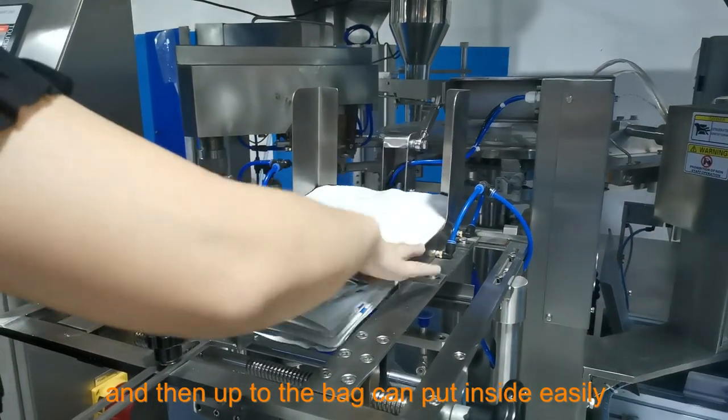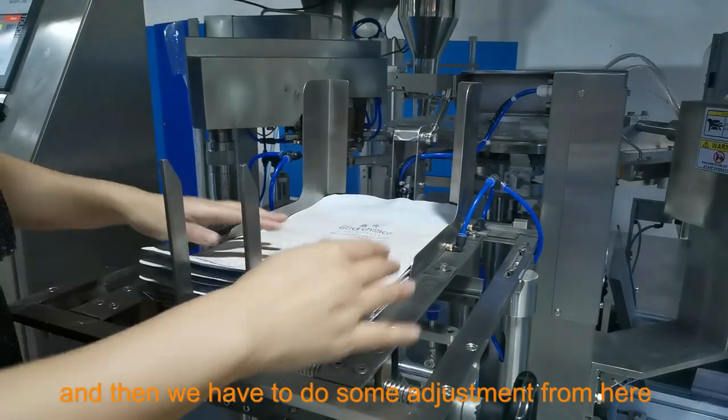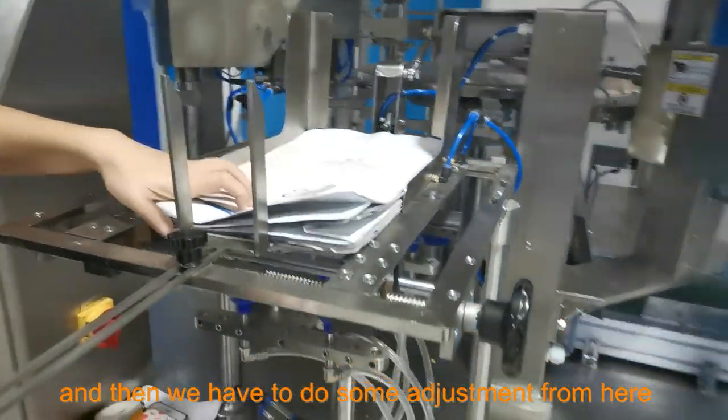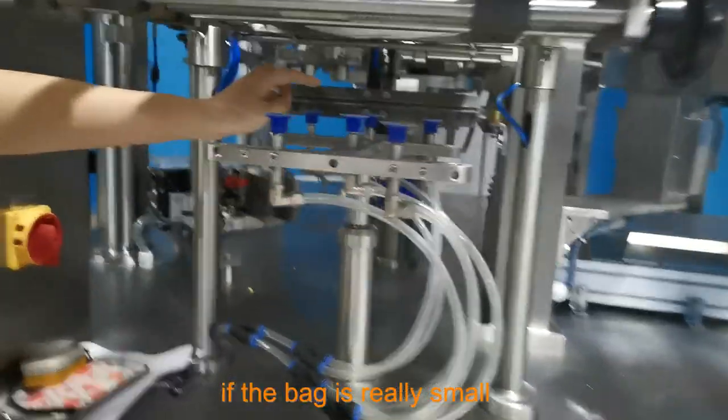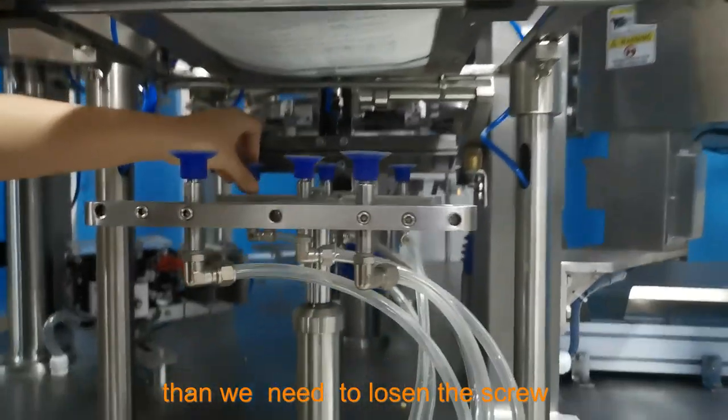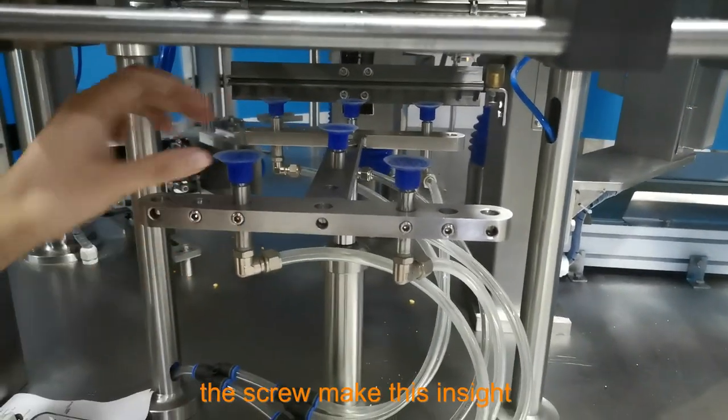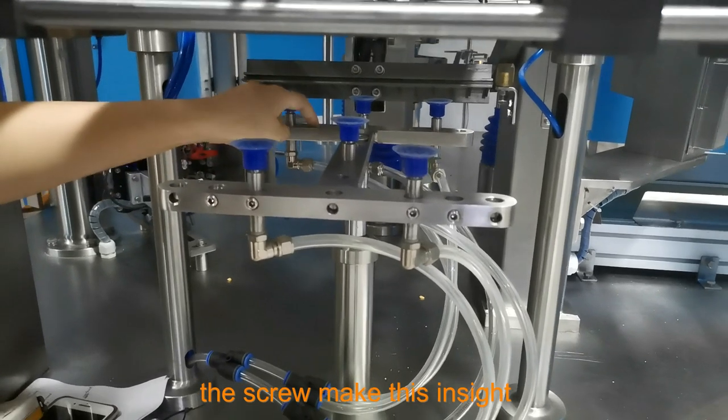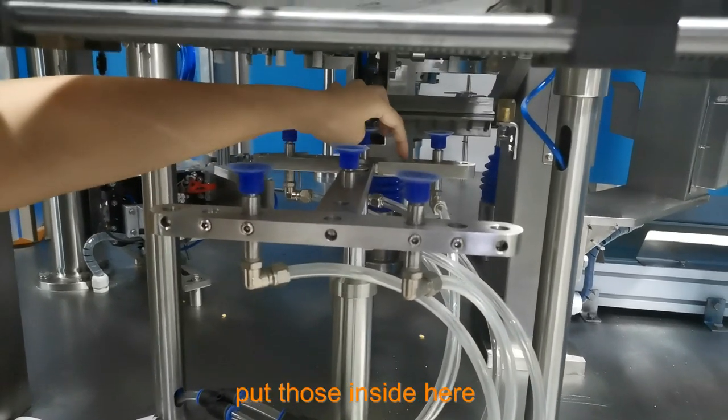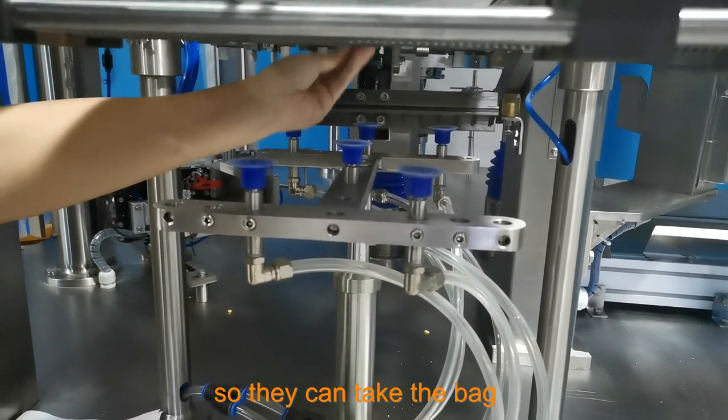And then we have to do some adjustments here. If the bag is very small, then we need to loosen the screw with the screw. Make this inside, make to adjust here so they can take the bag.